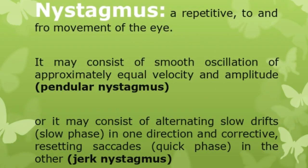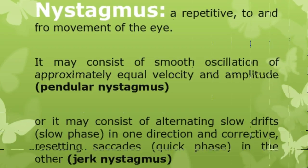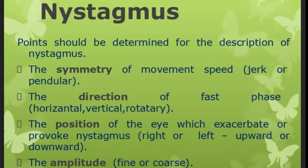Nystagmus is a repetitive to-and-fro movement of the eye. It may consist of smooth oscillations of approximately equal velocity and amplitude, called pendular nystagmus, or it may consist of alternating slow drifts — the slow phase — in one direction and a corrective resetting saccade — the quick phase — called jerk nystagmus. Points to determine for description: the symmetry, the direction, the position of the eye which exacerbates or provokes nystagmus — right, left, upward, or downward — and the amplitude, fine or coarse.